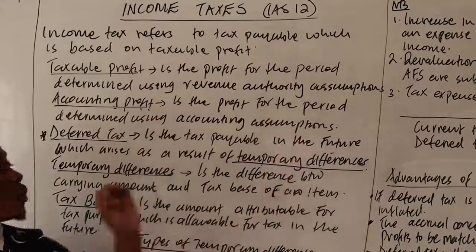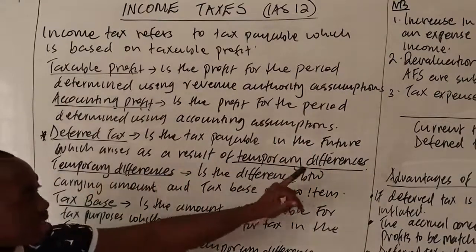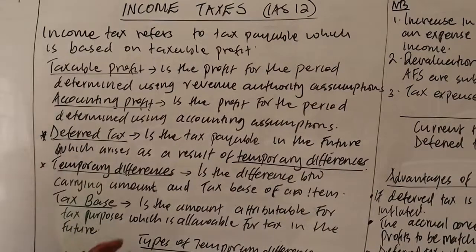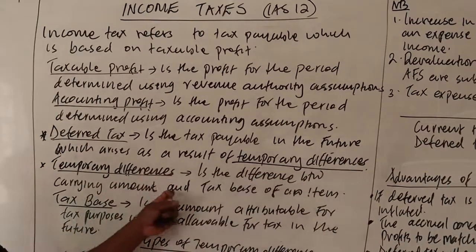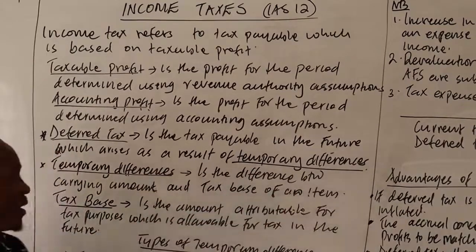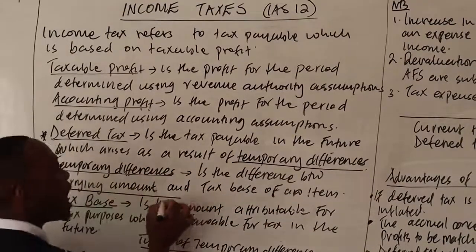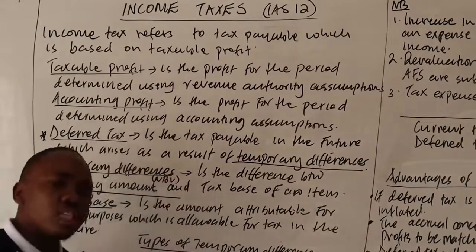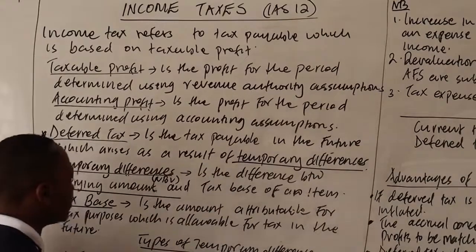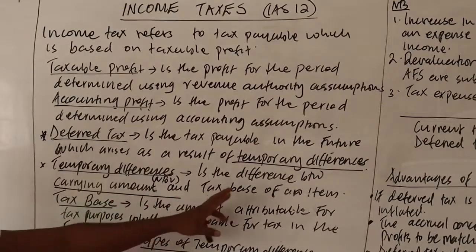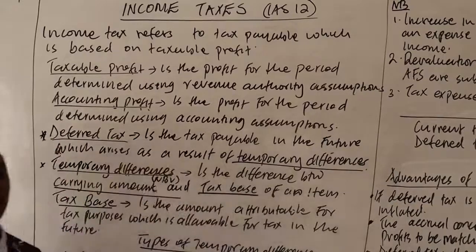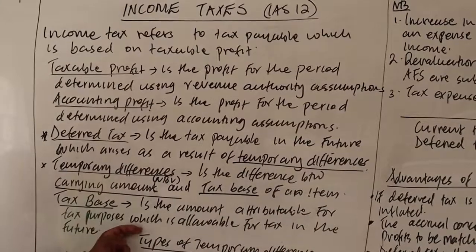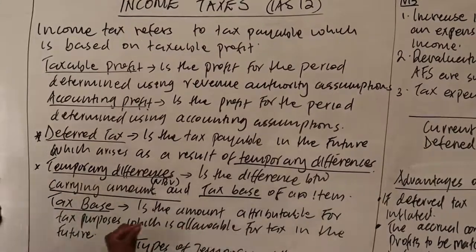Deferred tax is a tax payable in the future which arises as a result of temporary differences. Temporary differences are the difference between the carrying amount and the tax base of an item. The carrying amount refers to the net book value — the amount at which an item is presented in the financial statements. Tax base is the amount attributable for tax purposes, which is allowable for tax in the future.